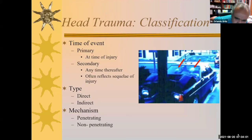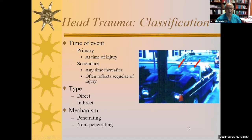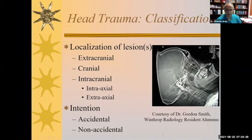In terms of classification, we can look at head trauma as to when it occurs relative to the time of the event, whether it's at the time of the injury or sequelae that occurred thereafter. The time of injury may reflect the head hitting the windshield in folks who do not wear seat belts, or who are thrown from their car, struck by a car, or fall off a motorcycle. The type of trauma, whether it's direct or indirect, is very important. The mechanism, whether it's penetrating or non-penetrating, has clinical, forensic, and legal implications.